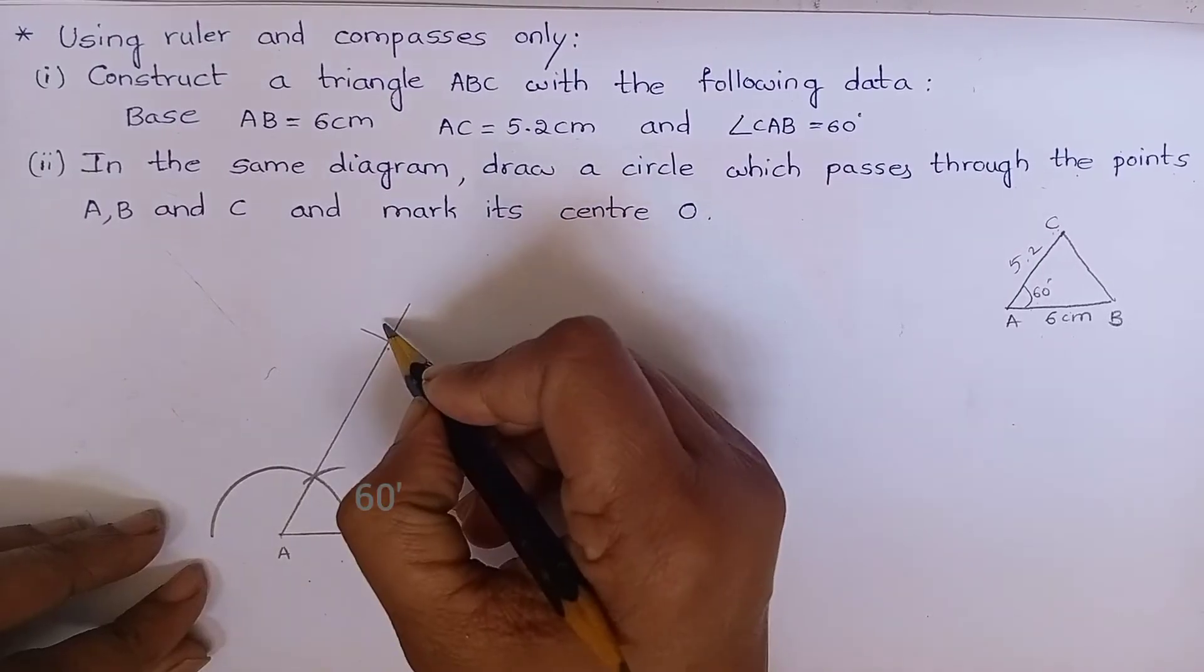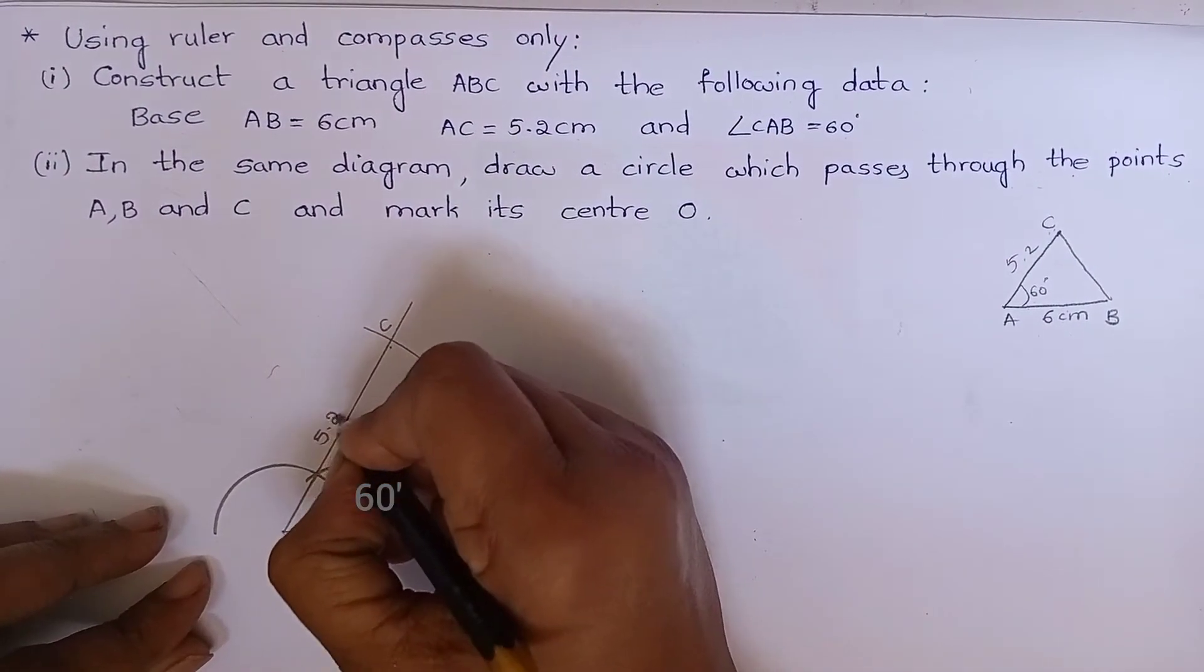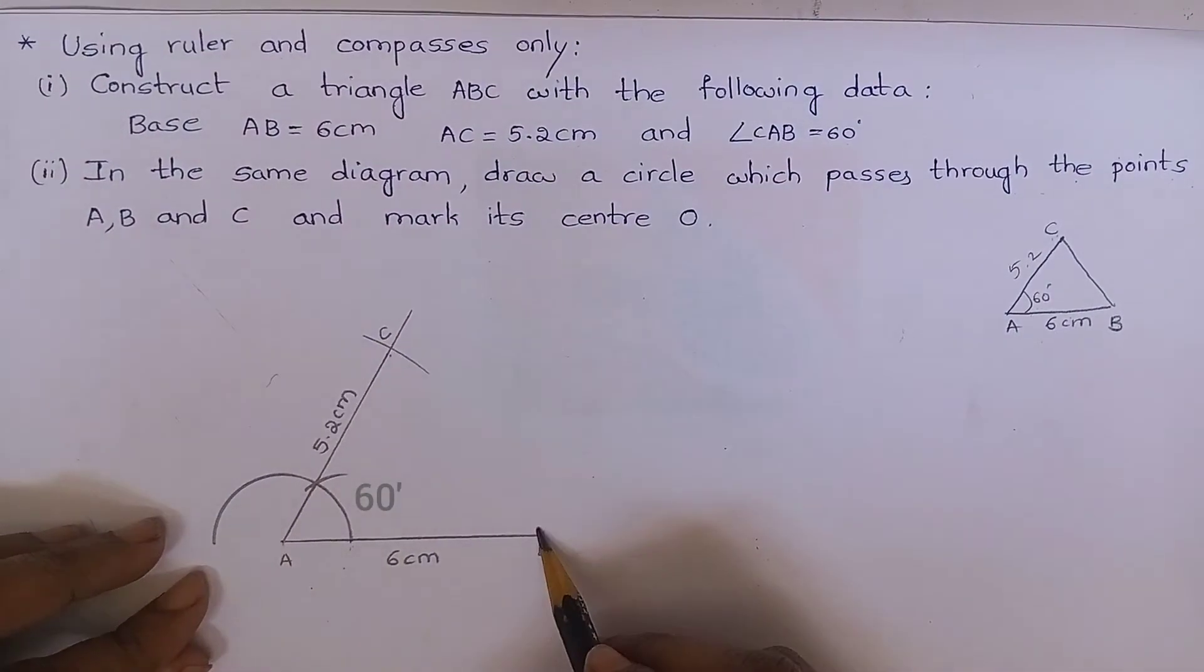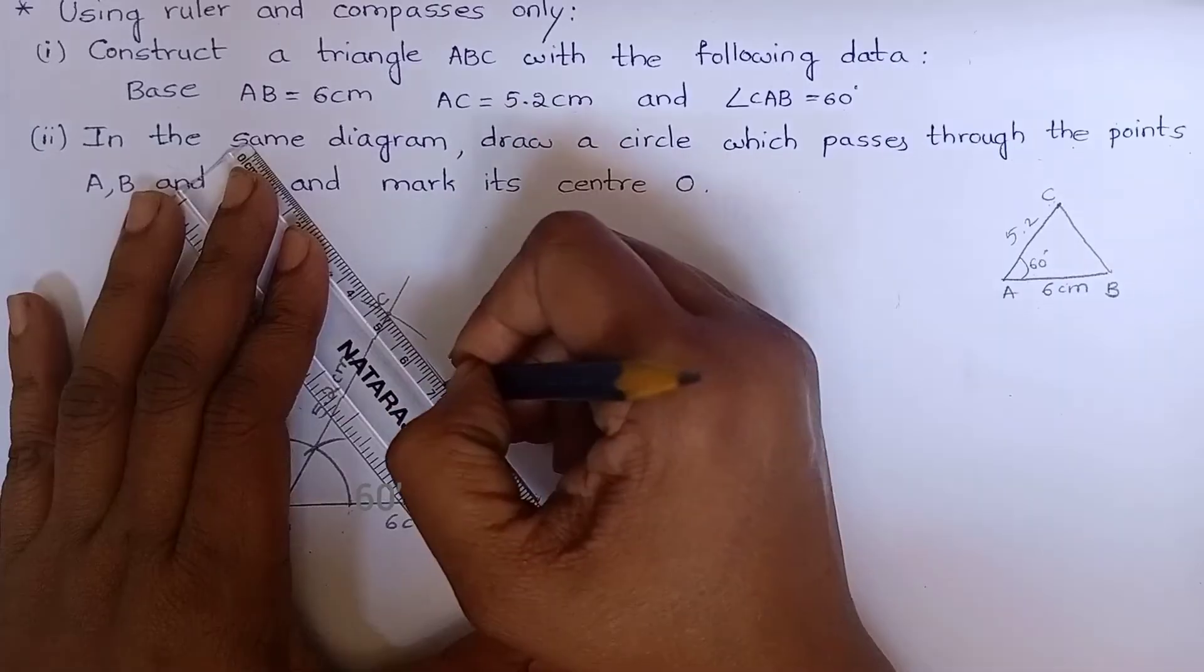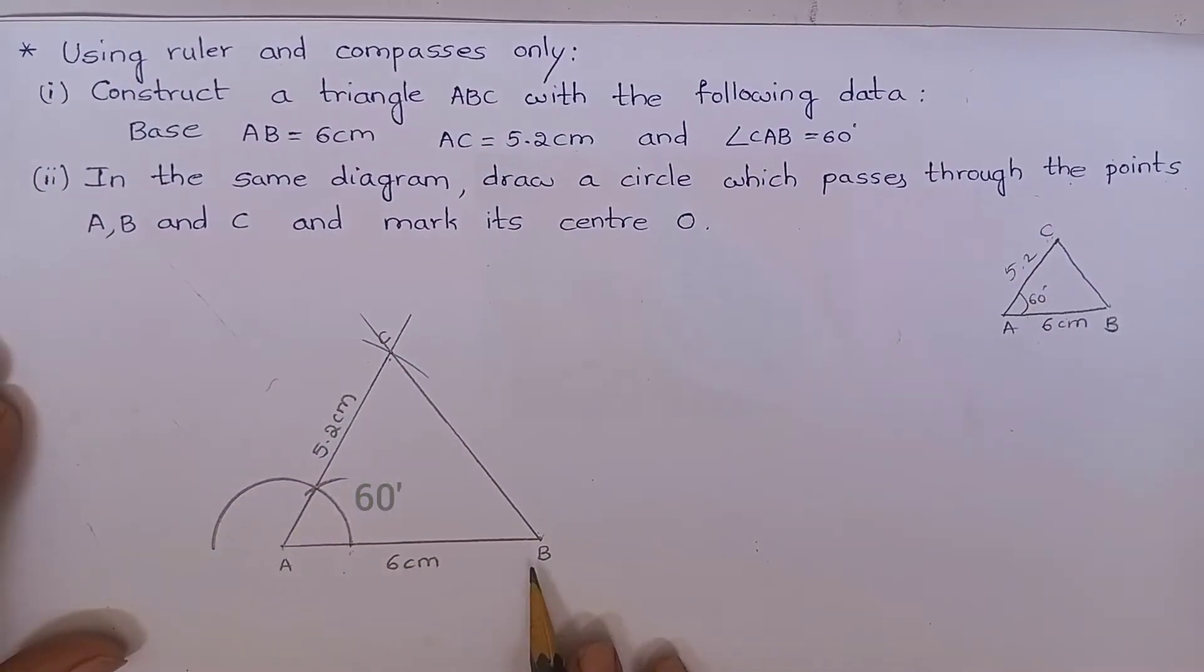Mark this point as C. And AC is 5.2 centimeters. Join BC. We have constructed a triangle.